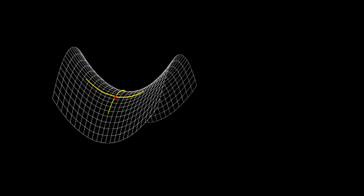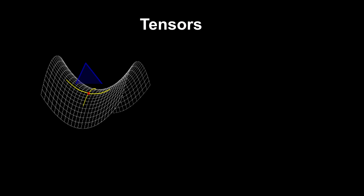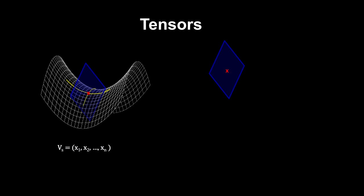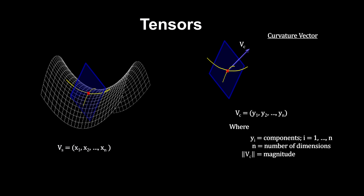We can also construct a surface for each dimension. Each surface has a size and an orientation. We can use vectors to mathematically represent the size and orientation of the surfaces. And for each surface, we can construct a vector that represents the curvature of the lines through a point on the surface.